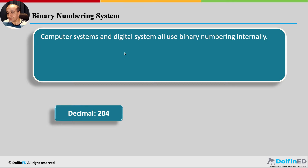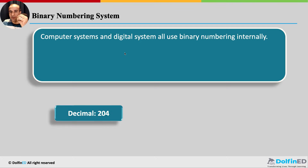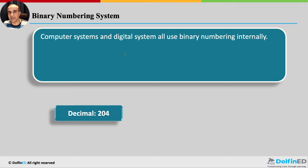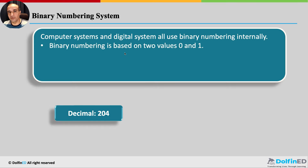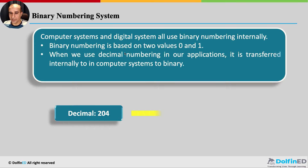The binary numbering system, unlike the decimal numbering system, has only two symbols: 0 and 1. In the decimal numbering system we have 0 through 9 — these are the symbols used to build any decimal number or integer. Computer systems and digital devices all use the binary numbering system internally.